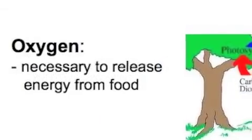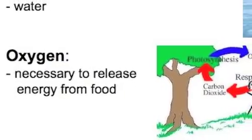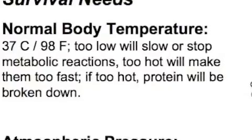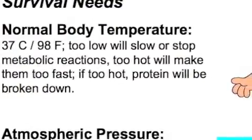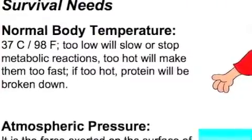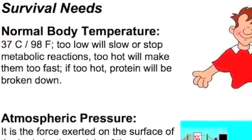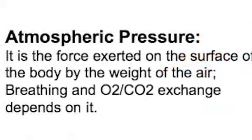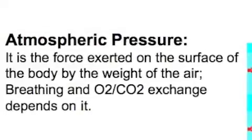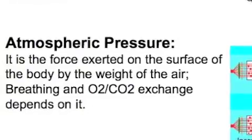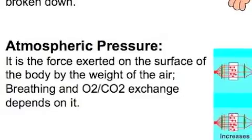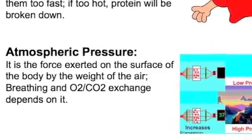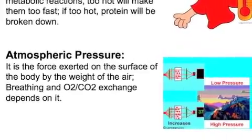We need oxygen. Without oxygen, we cannot release the energy stored in food. Another thing we need is a steady temperature. Our internal temperature is 37°C, or 98°F, and that needs to be stable. If it's too low, metabolic reactions will stop. If it's too hot, they get very fast and erratic, and if even hotter, proteins will denature. Lastly, atmospheric pressure — the force exerted on the surface of the body by the weight of the air — is important because the movement of gases in and out of our lungs depends heavily on atmospheric pressure.